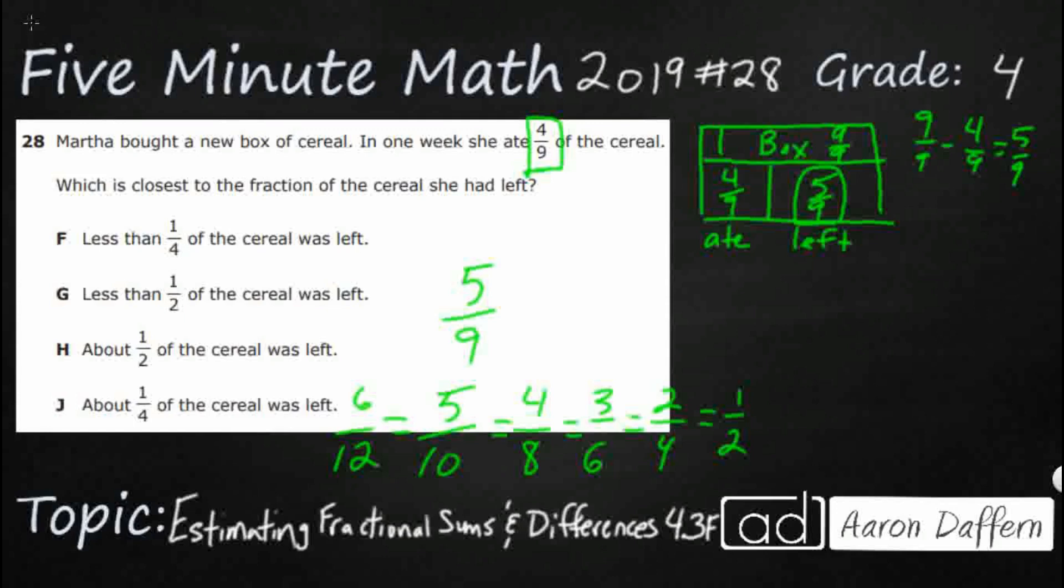But you notice that our five-ninths, if we take something and we break it up into nine pieces, so let's say we broke this up into nine pieces, and then we broke up this other one here into ten pieces, you're going to notice that the nine pieces are going to be a little bit bigger than each of our tenths.